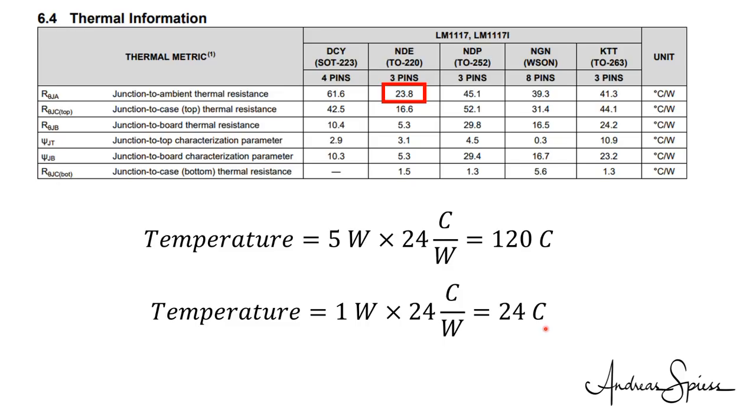If we need more power, we could mount it on a heatsink. Then, the degrees per watt value would be reduced, and so the temperature. You see, reading datasheets sometimes is a good thing. Before the magic smoke escapes, or afterwards. Depends on your personality.